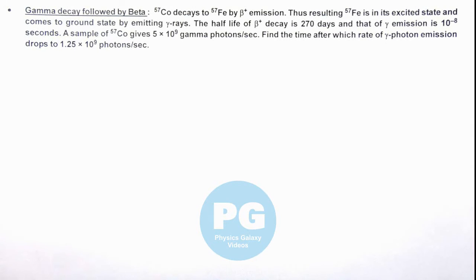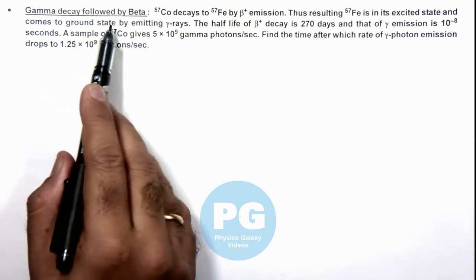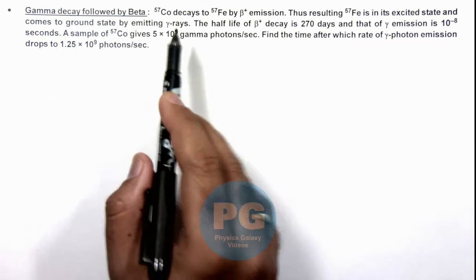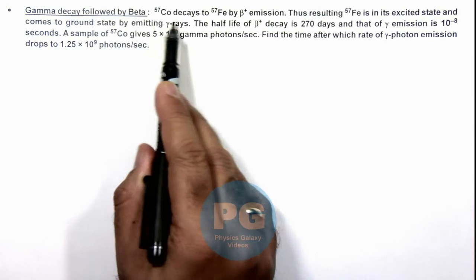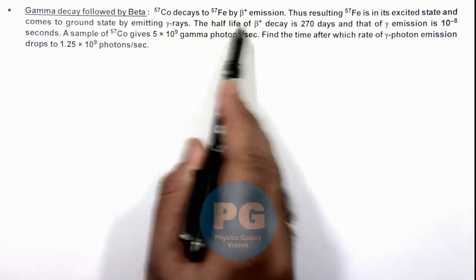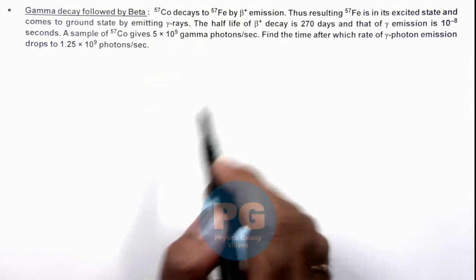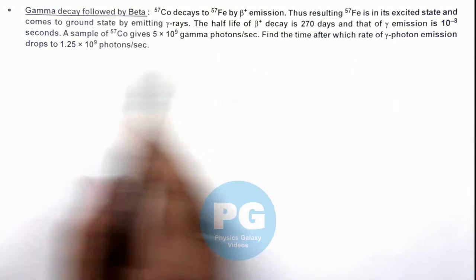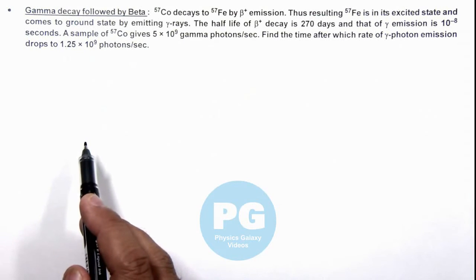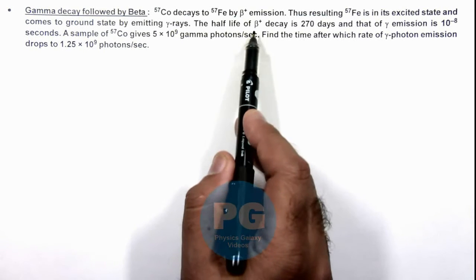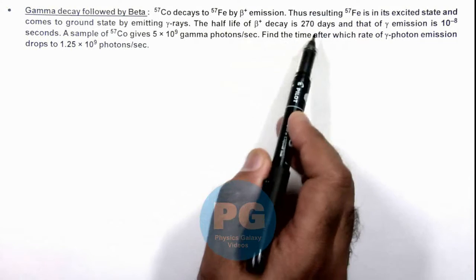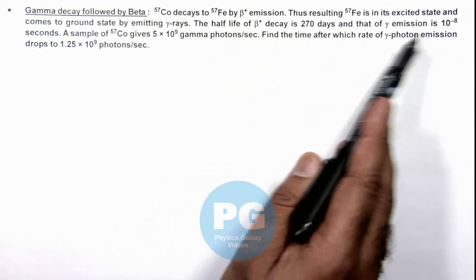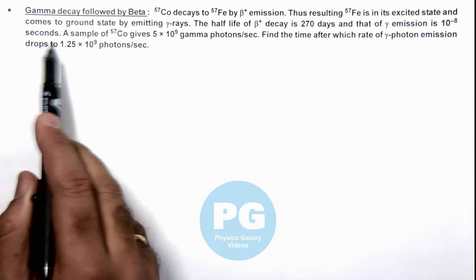In this illustration we'll discuss a situation when a gamma decay is followed by beta. Here we are given that Cobalt-57 decays to Iron-57 by beta plus emission, and the resulting iron in its excited state comes to ground state by emitting gamma rays. We are given that the half-life of beta plus decay is 270 days and that of gamma emission is 10 to the power minus 8 seconds, which is very low.